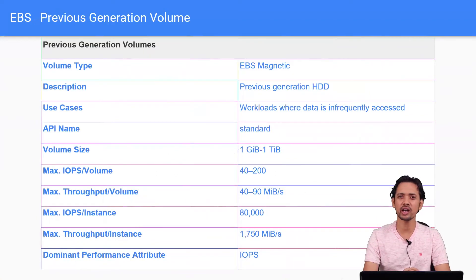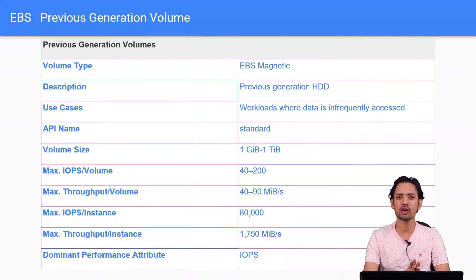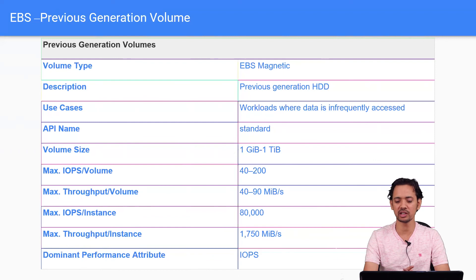Those were the current generation volume types. We also have the magnetic disk, which is a previous generation volume that is being discontinued going forward. It is used for workloads where data is less frequently accessed, with throughput per volume of 40 to 90 MB per second. Its maximum IOPS per volume is also very low compared to the others.